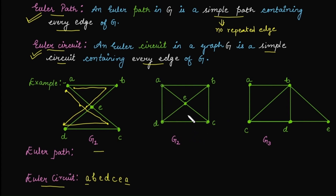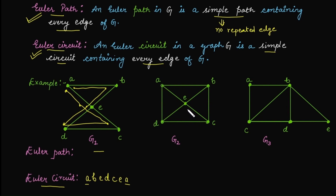Now for graph G2, can you find an Euler circuit or Euler path? Starting from vertex E: E to A, A to B, then move to E, D, C, E — but going back to B would mean repeating an edge. Let's try another way: starting from E, then B, then D, D to C, C to B. There is no way to cover all remaining edges without repetition, so G2 does not have an Euler path or Euler circuit.